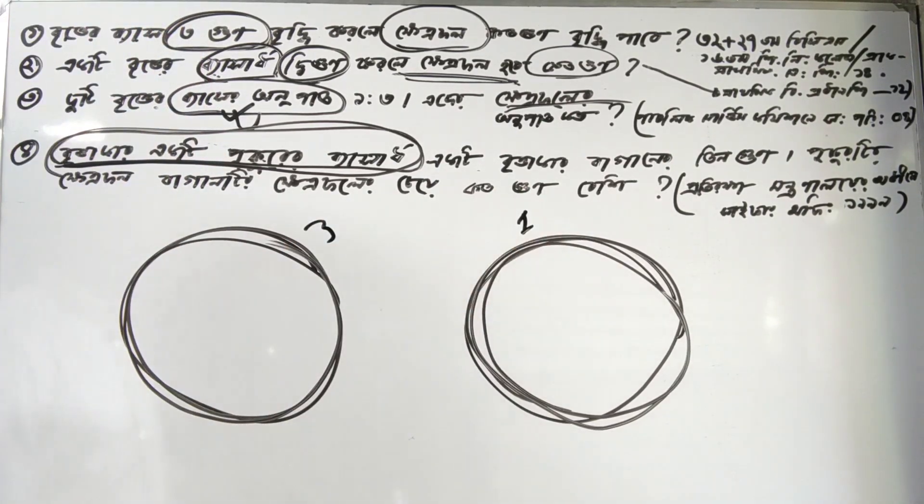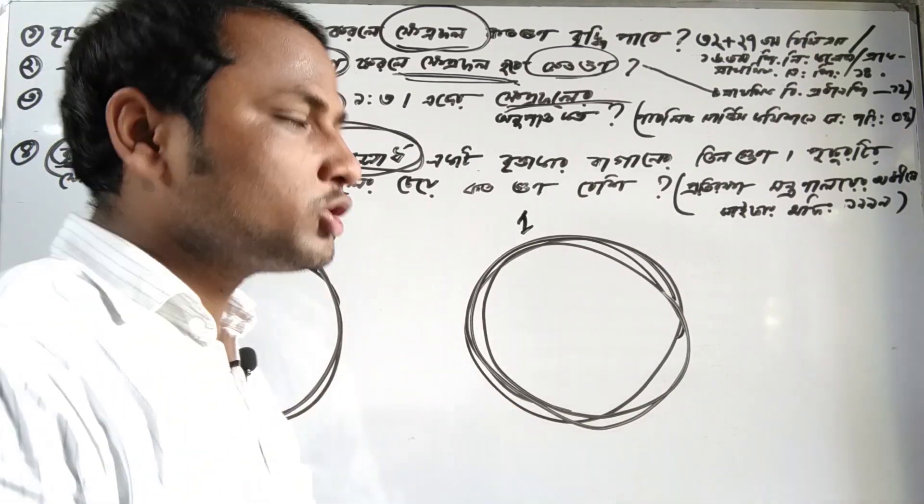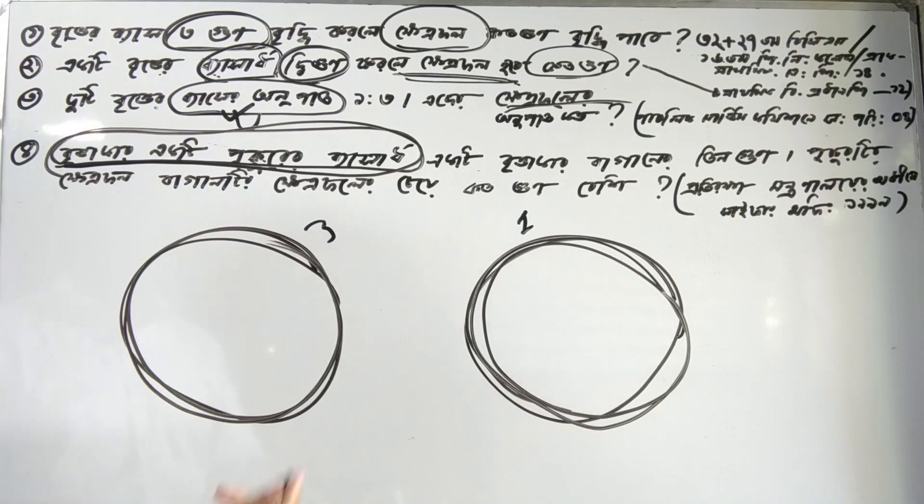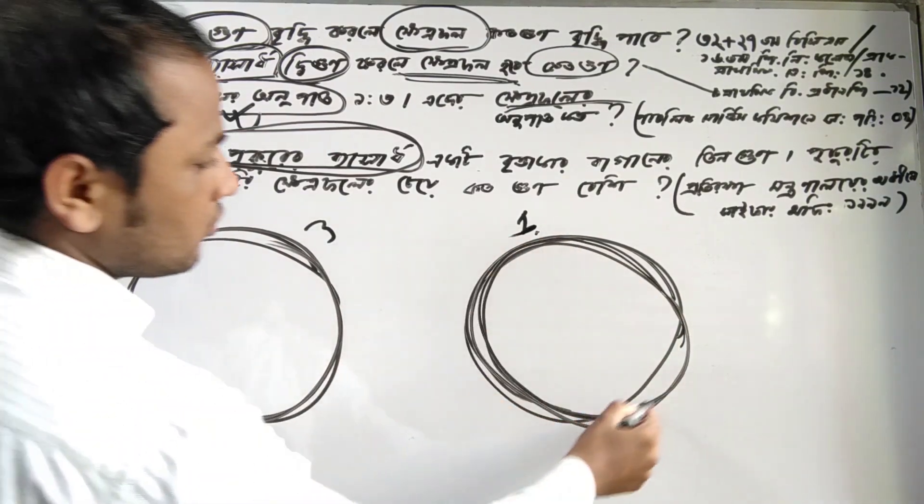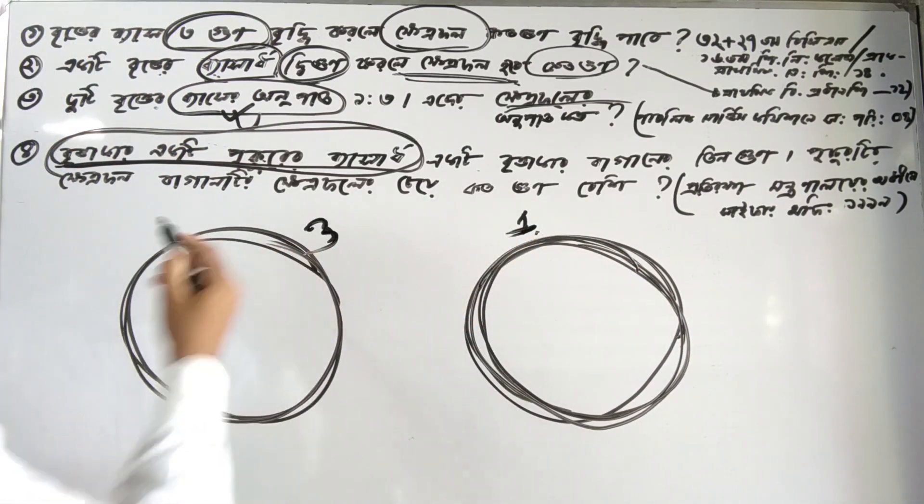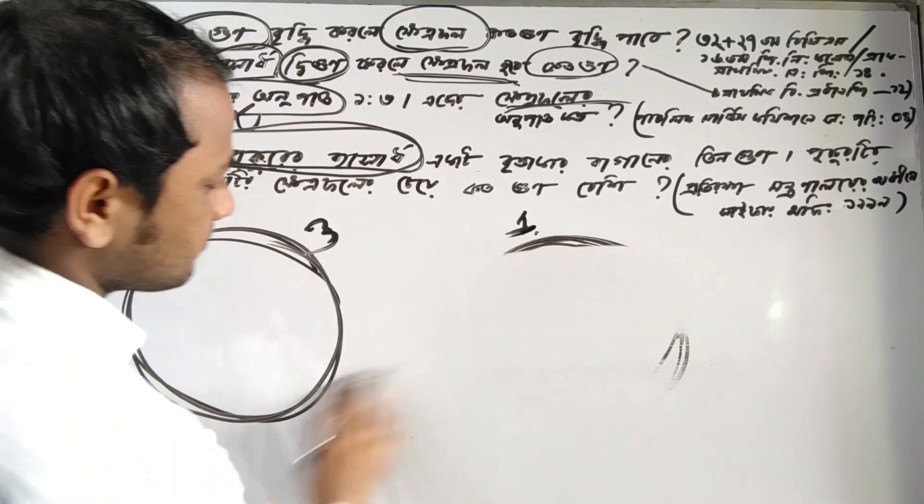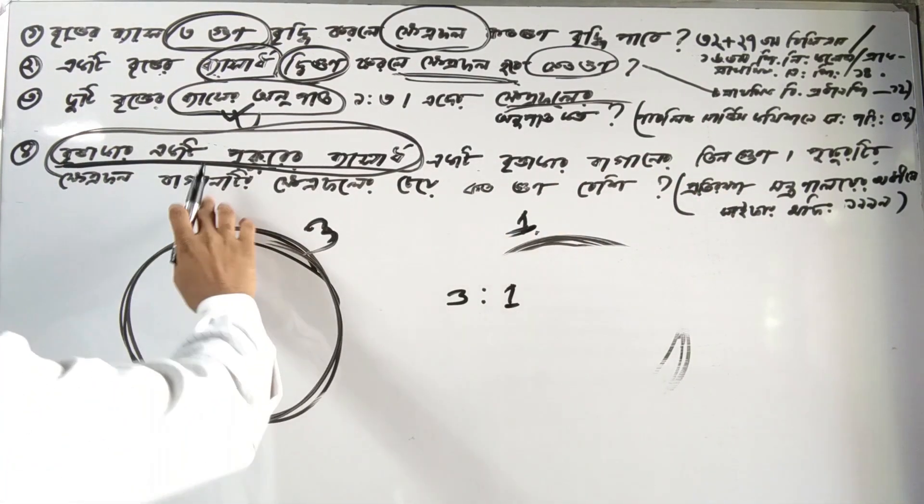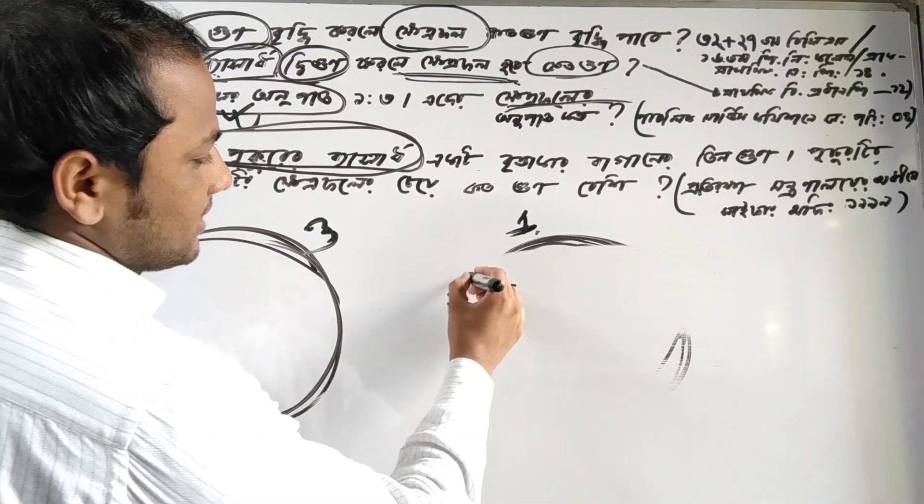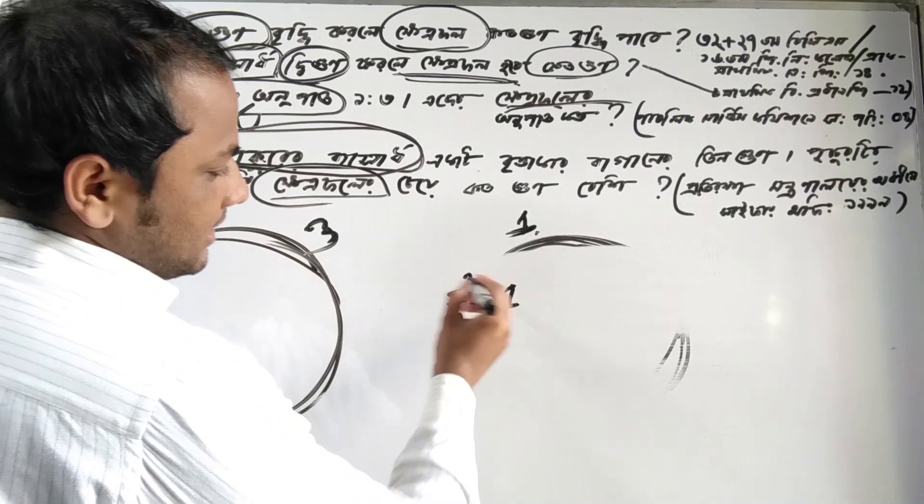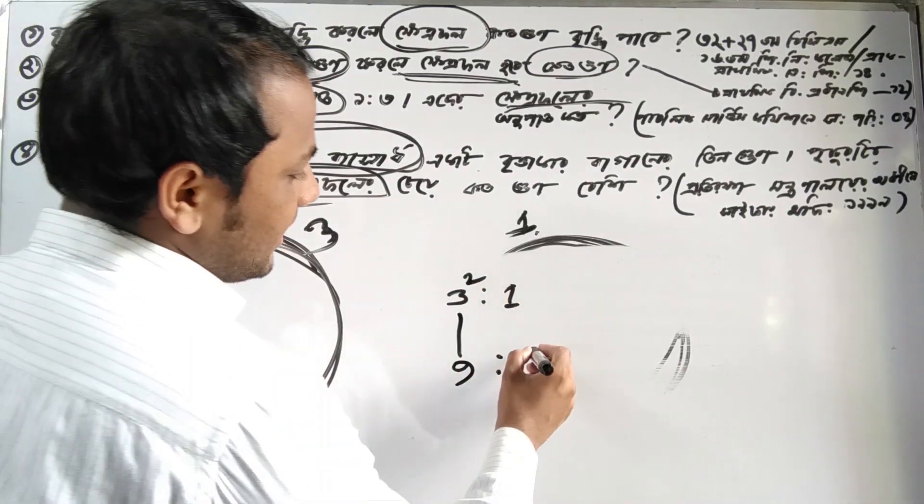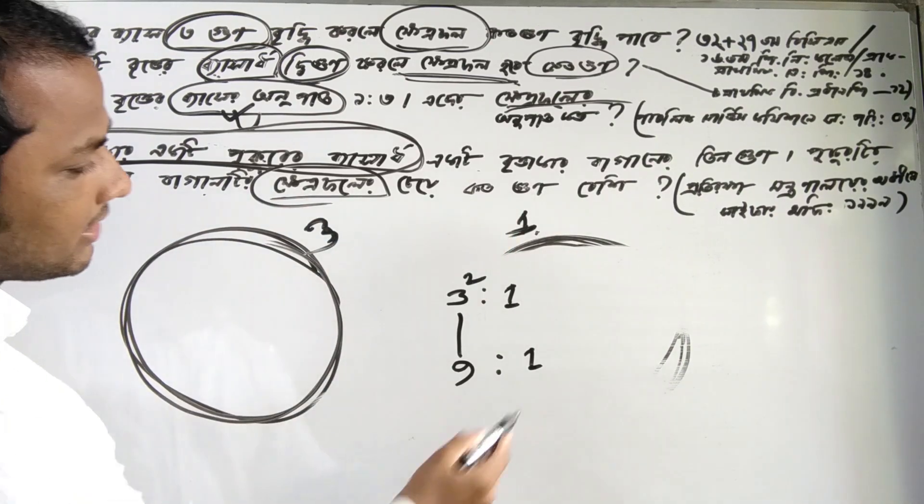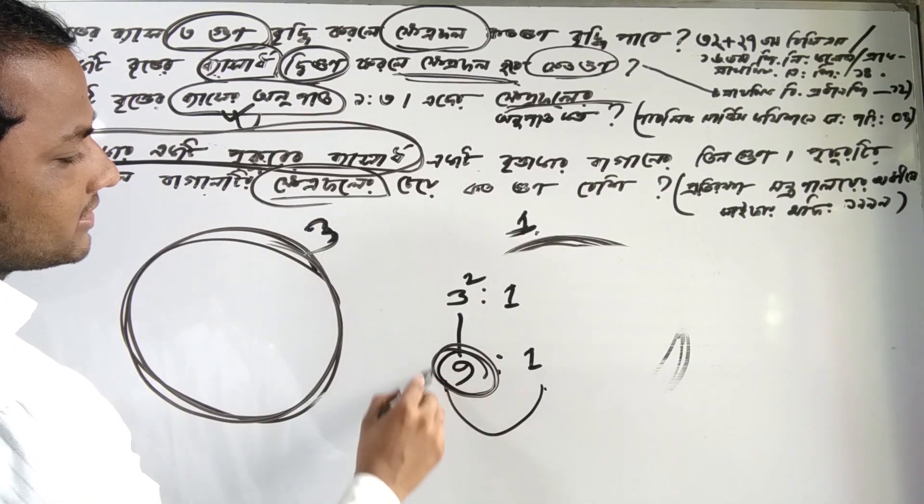Now I'll work through the calculation step by step. We have three values to consider here. Looking at the problem, we need to find how to express this correctly. The key is understanding which mathematical identity to apply to get the answer.